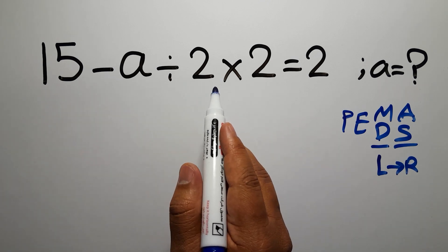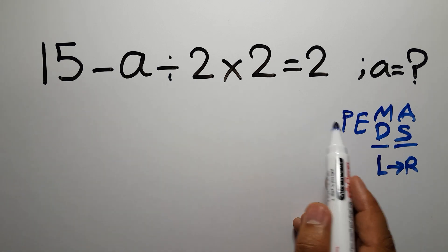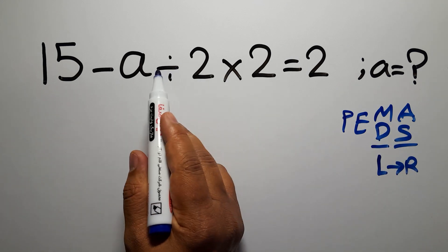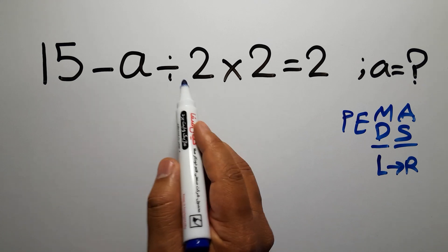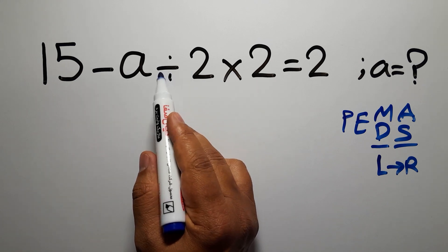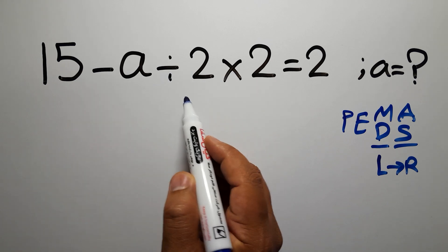So here in PEMDAS, multiplication and division have higher priority than subtraction, and also multiplication and division have equal priority and we have to work from left to right.